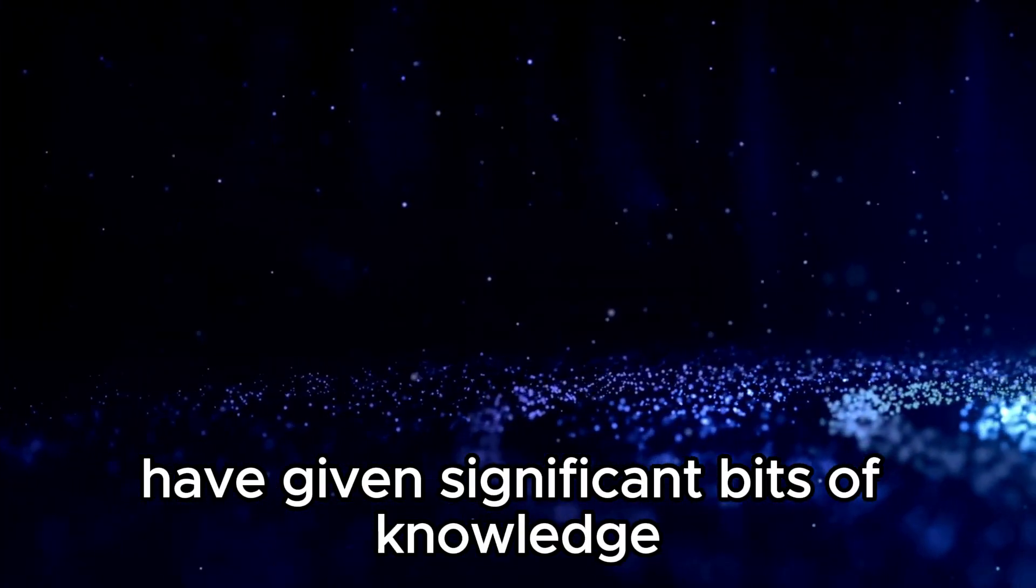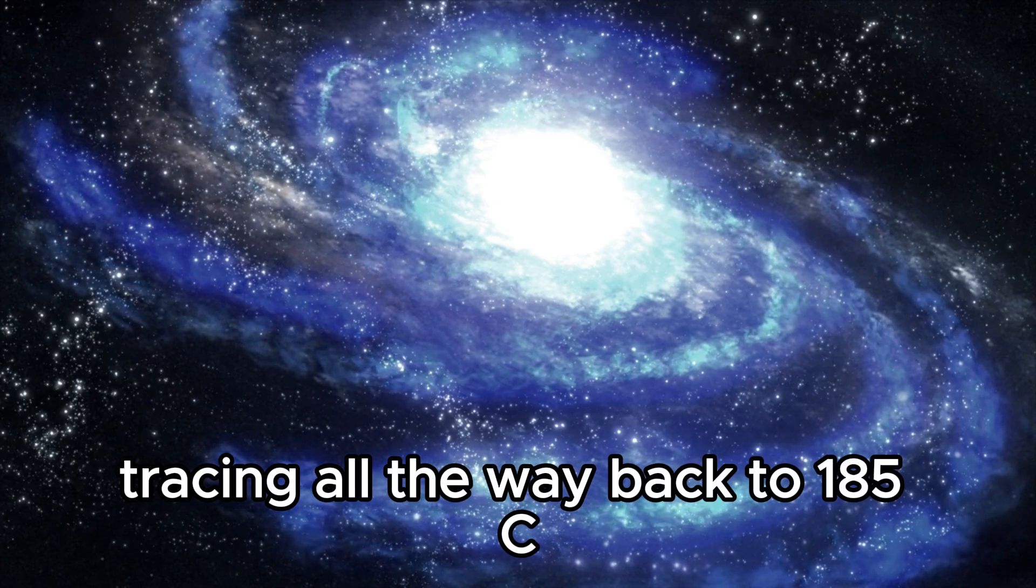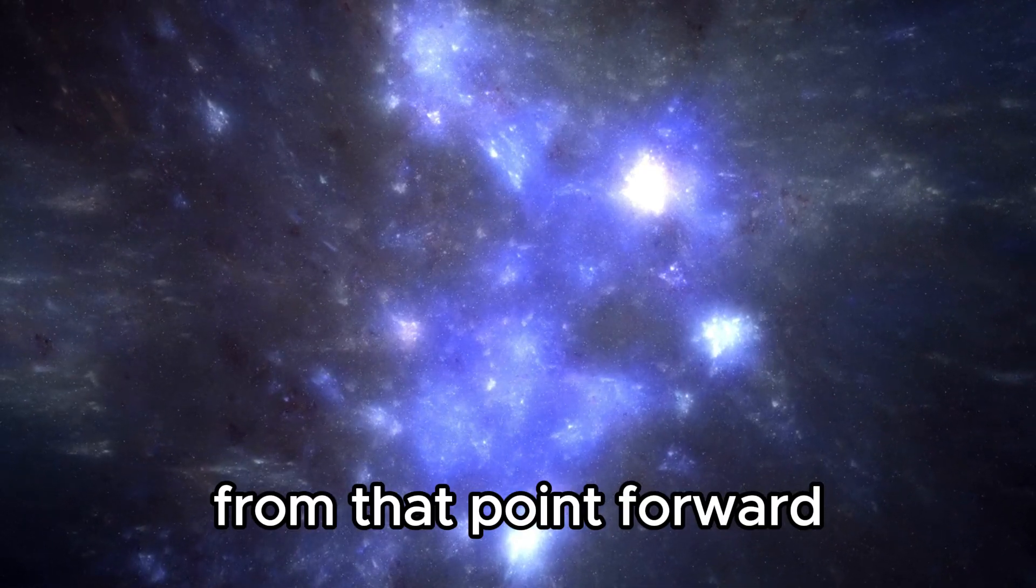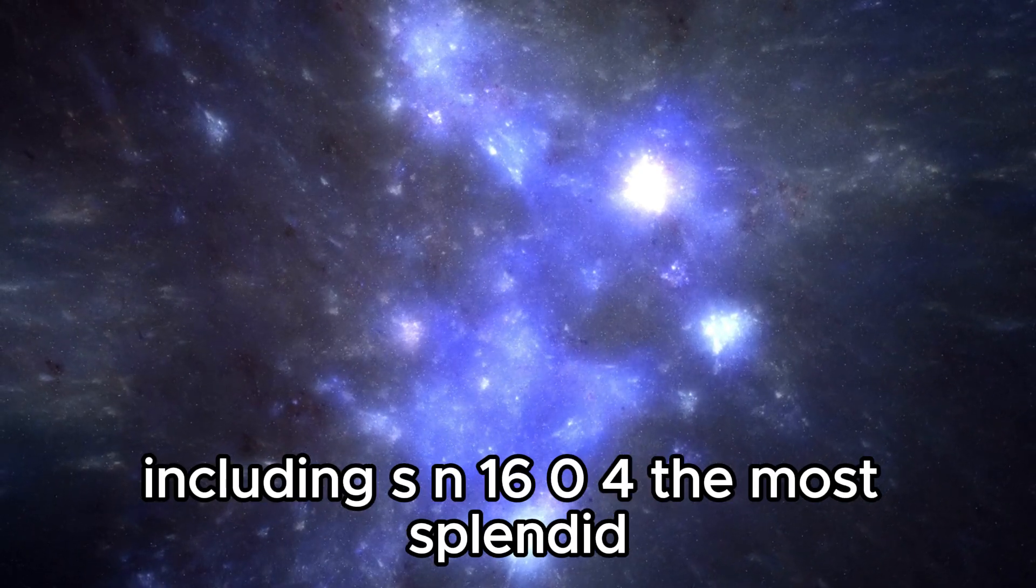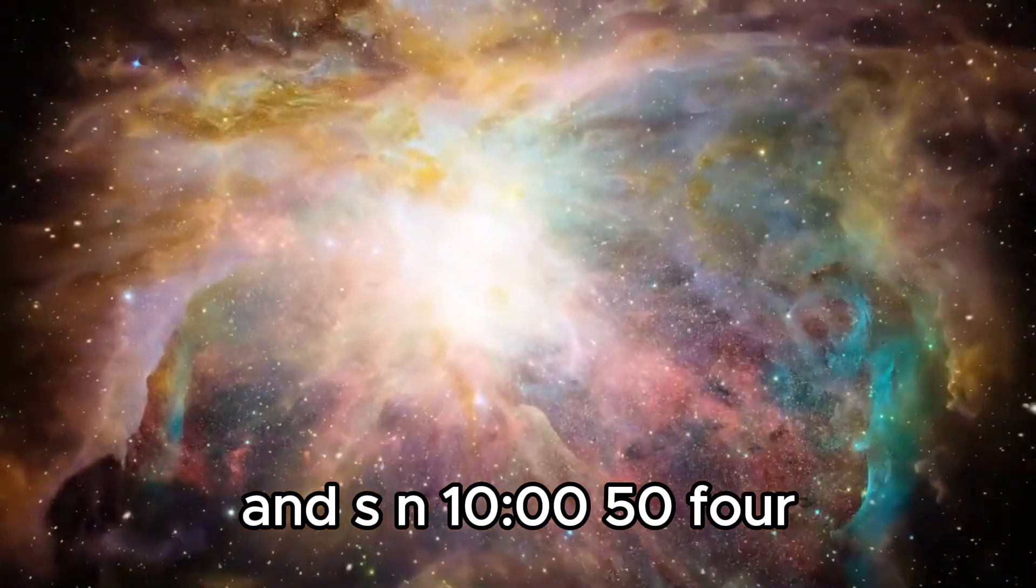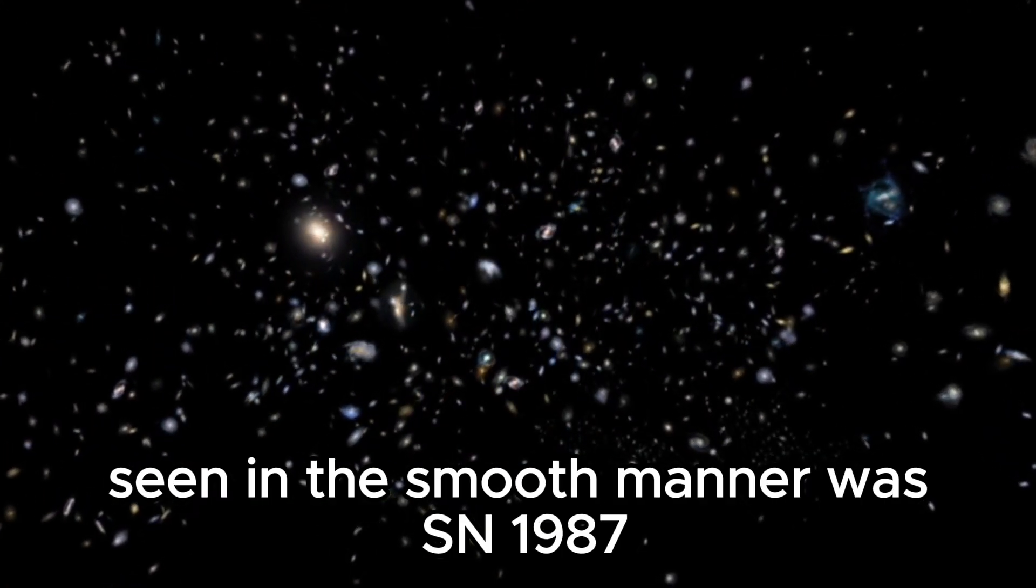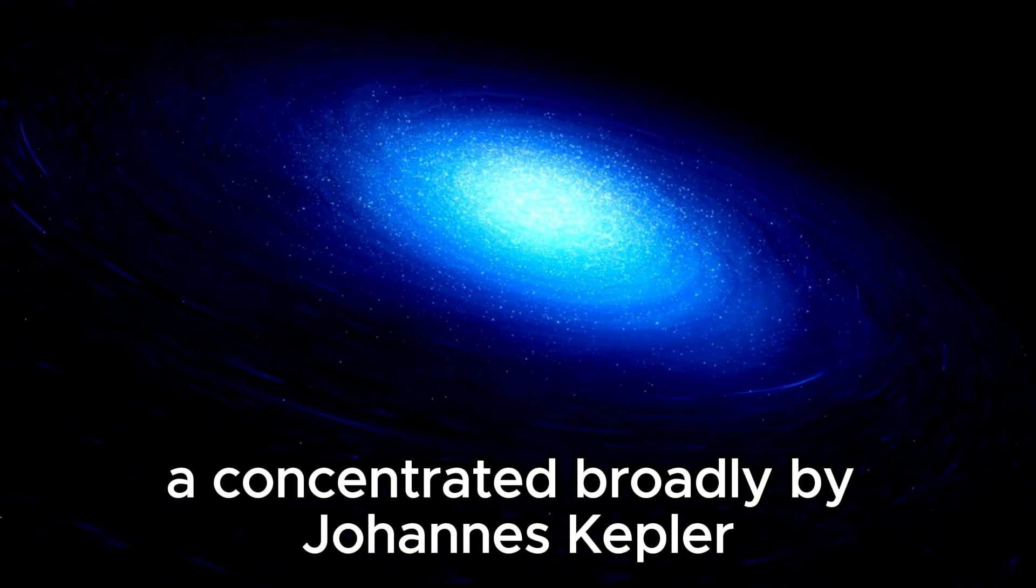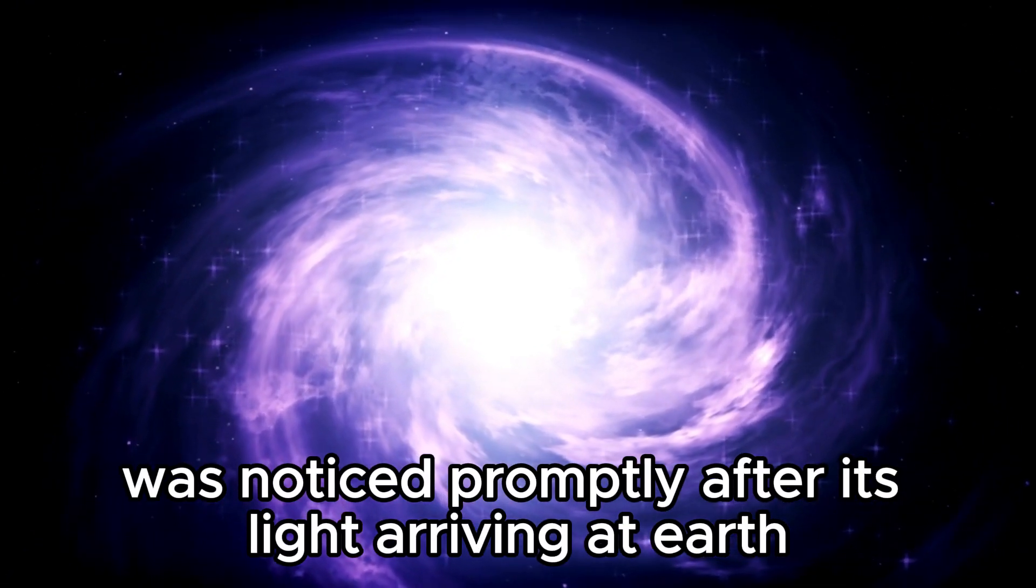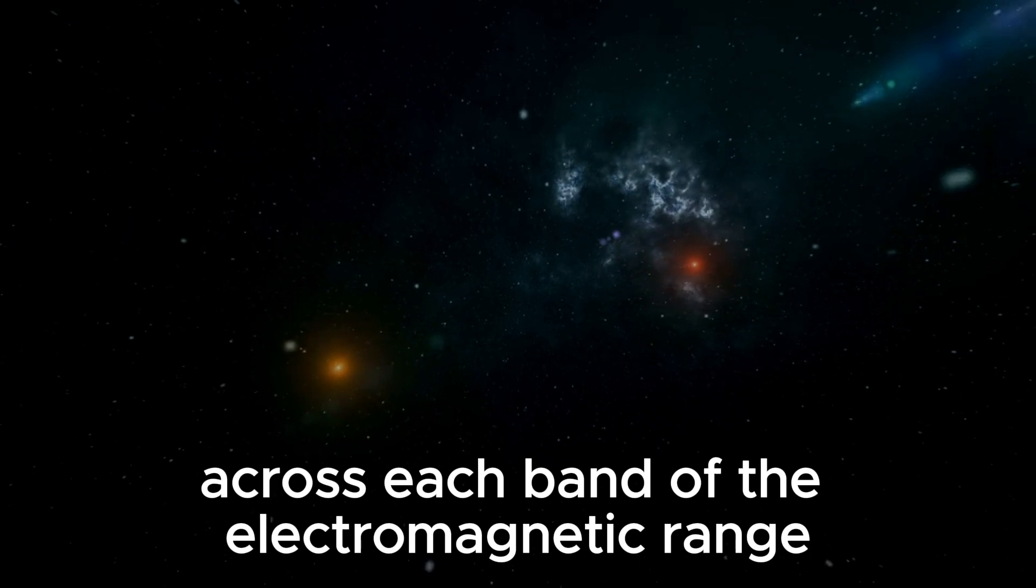Observations of supernovae have provided valuable insights into stellar deaths. The earliest confirmed record of a supernova tracing back to 185 CE was observed as a brilliant star that took around eight months to fade from the sky. From that point forward, several significant supernovae have been recorded, including SN1604, the most splendid recorded star ever to appear in our night sky, visible across different regions of the planet, and SN1054, which brought about the formation of the Crab Nebula and was visible in sunlight for 23 days. The latest supernova seen in the Milky Way was SN1987A, studied extensively by Johannes Kepler. More recently, supernova 1987A in the Large Magellanic Cloud was observed promptly after its light reaching Earth, marking the first supernova detected through neutrino emission and observed across each band of the electromagnetic spectrum.